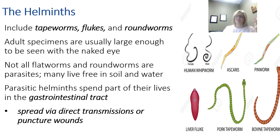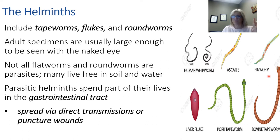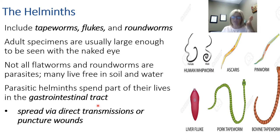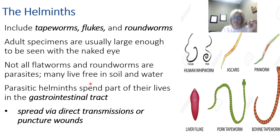Adults are usually large enough to be seen with the naked eye, and some of these you're probably familiar with — dogs tend to get a lot of these. Ascaris, pinworms, and whipworms are worms dogs get. Not all flatworms and roundworms are parasites — many live free in the soil and water. You'd be shocked at how many worms are actually in a little square inch of soil. Parasitic helminths, though, spend part of their lives generally in the gastrointestinal tract.